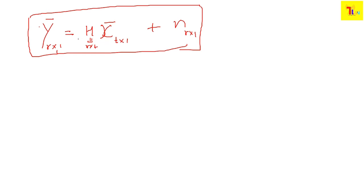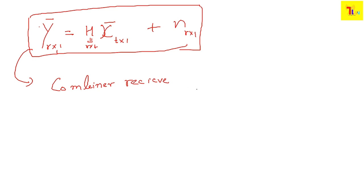At the receiver side, we receive y but still don't know x or the exact noise. We need to recover the x symbol. For that we apply receiver combining — also called receive beamforming — where we use a combiner matrix at the receiver.